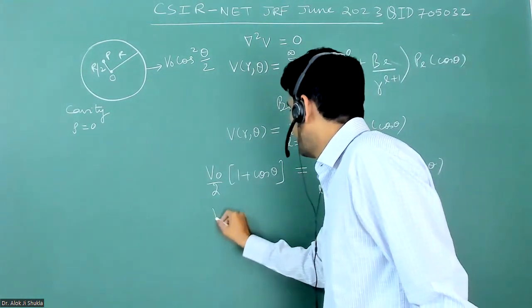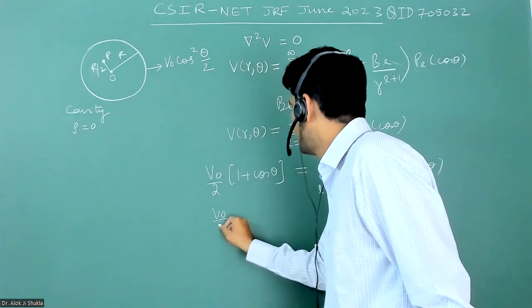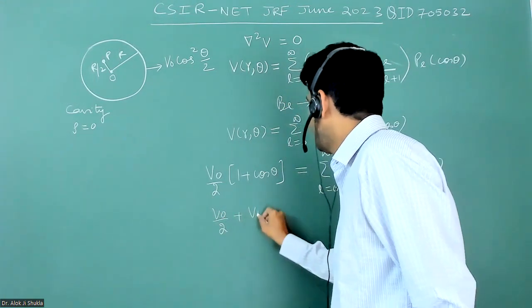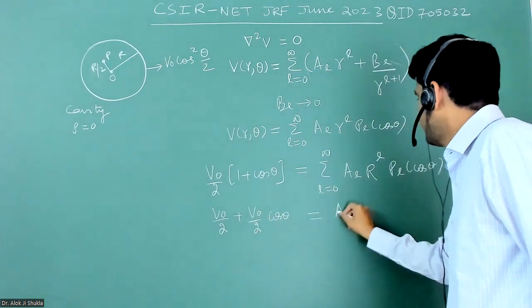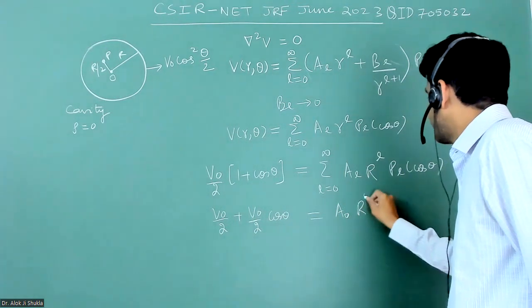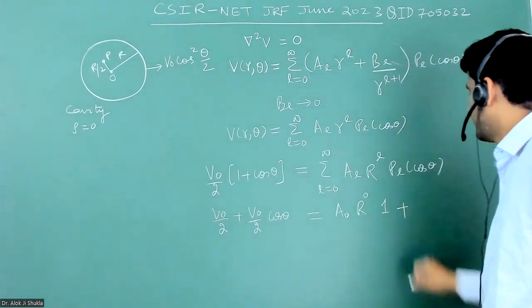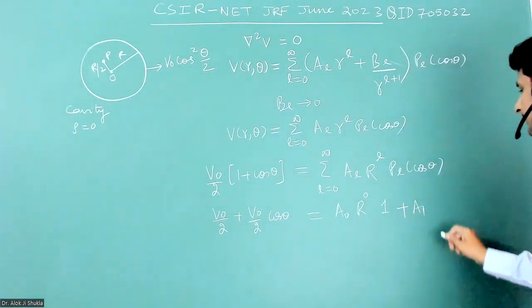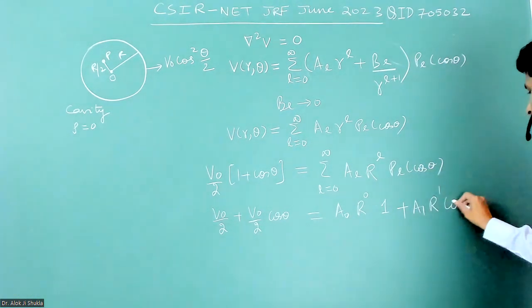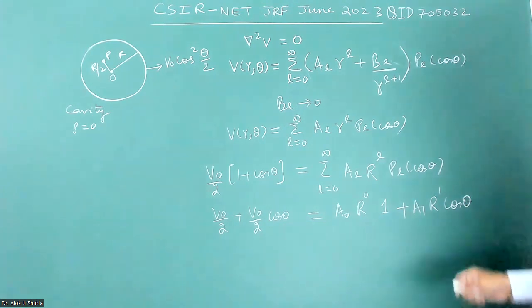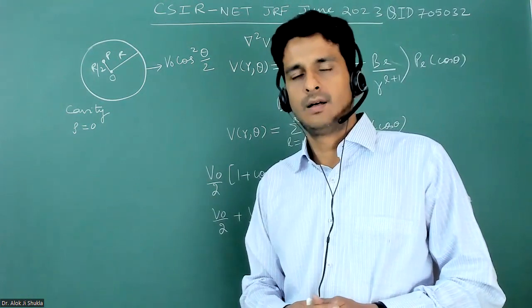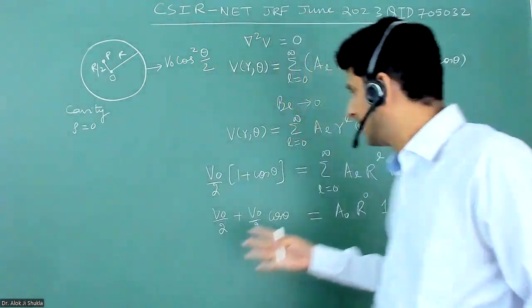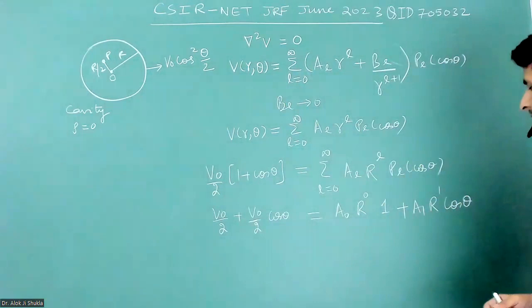Just intelligently write here V₀ by 2 plus V₀ by 2 cos theta equals A₀ R to the power 0 (P₀ is 1, degenerate polynomial) and A₁ R to the power 1 and P₁ is cos theta. A little bit knowledge of Legendre polynomial—I have given you in detail, I have taught you special functions—from that you know Legendre polynomial P₀ and P₁.